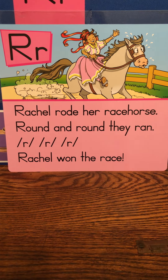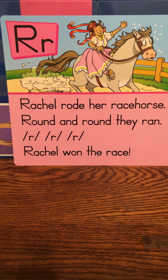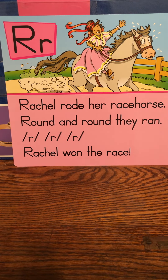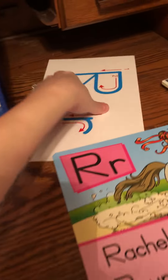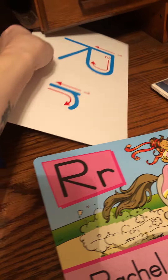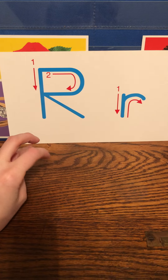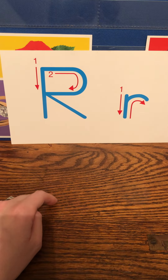Rachel rode her racehorse round and round, they ran — er, er, er — Rachel won the race! And then of course we have to practice writing R. Right now we're just going to use our magic finger. I'm going to prop the R right up here and you can teach your families how we use our magic finger to write R and all of our other letters.